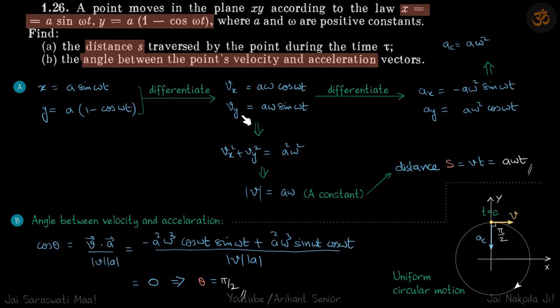The dot product will be Vx times Ax plus Vy times Ay. If you do that, you'll see that both terms are opposite, so they cancel out.